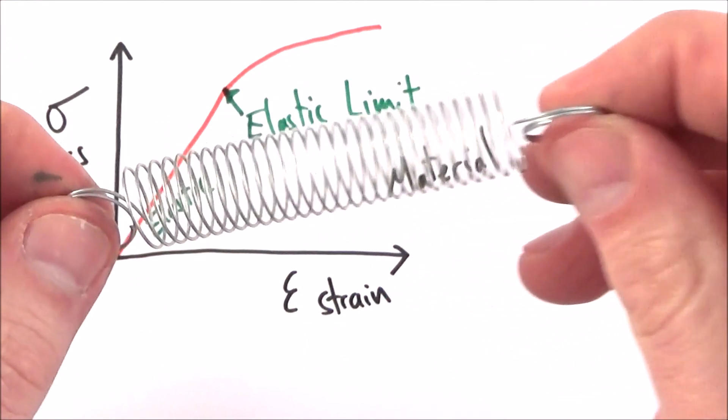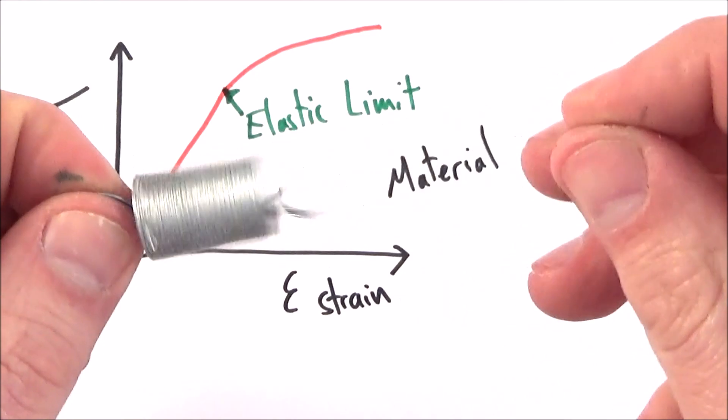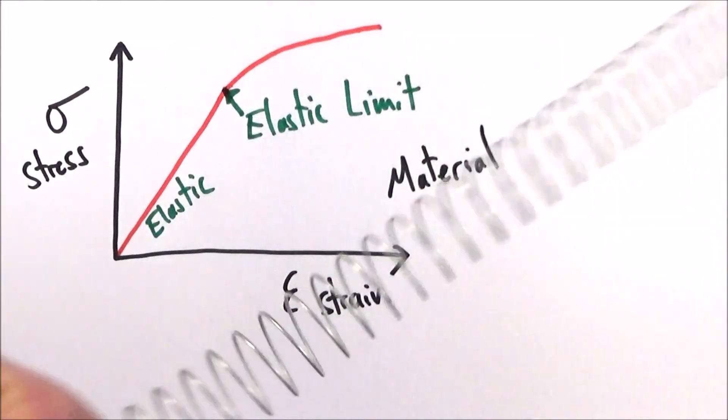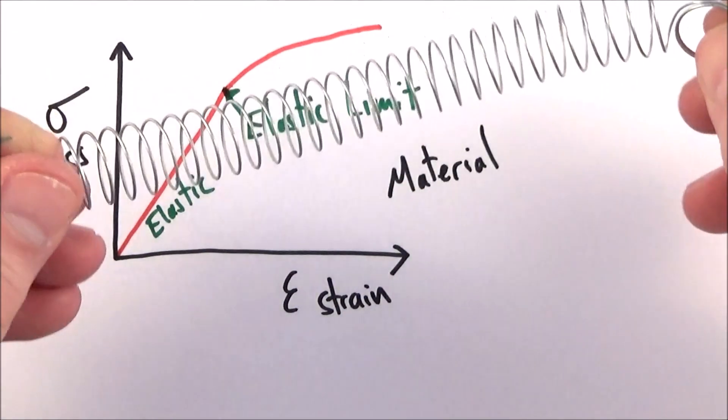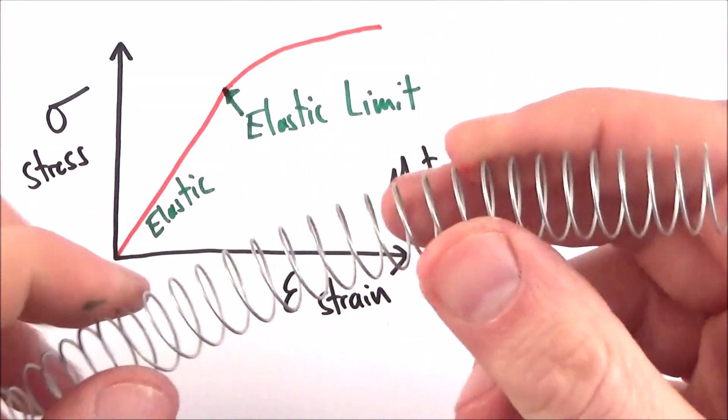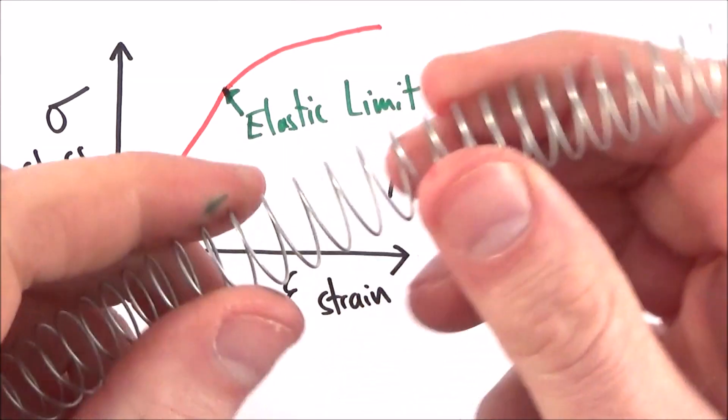Now for example, here we have a spring. When it's behaving elastically it just goes back. If I extend it too much, what we find is that it doesn't go back to its original shape afterwards, and we now have something which is behaving at times plastically.